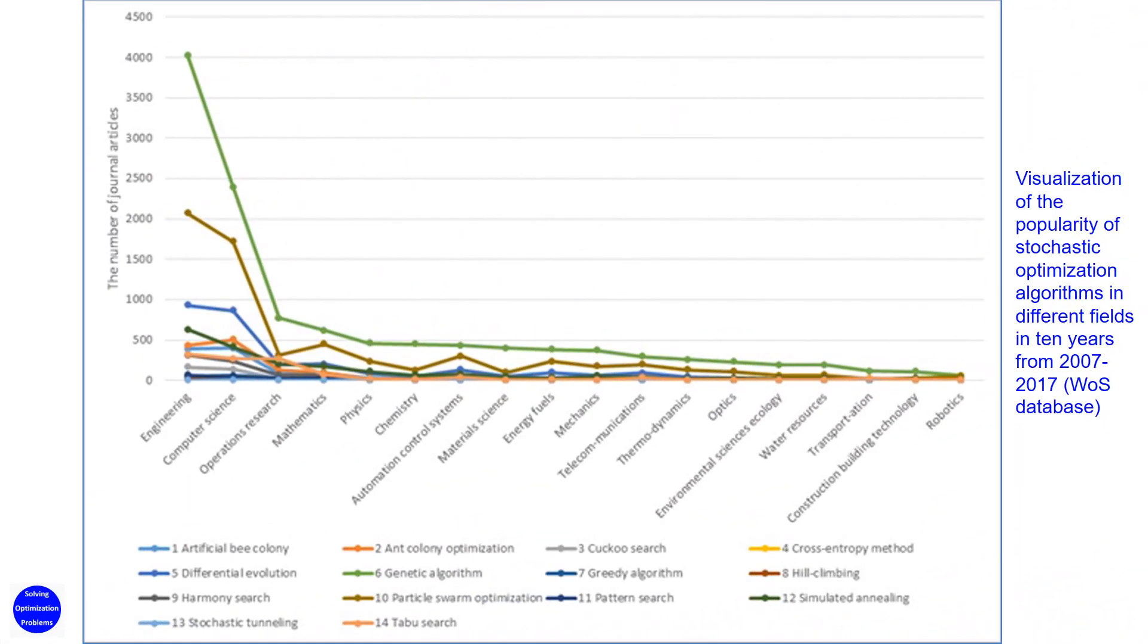Data from Web of Science, or WOS, indicates that, in terms of the number of journal articles, genetic algorithm is the most popular stochastic optimization algorithm in all 18 different research fields, followed by particle swarm optimization algorithm.